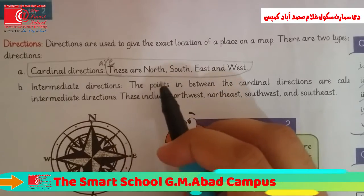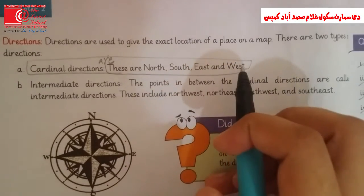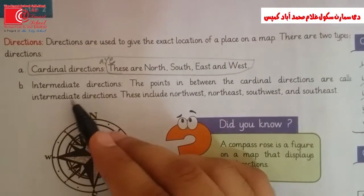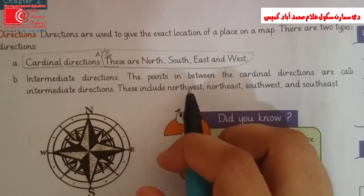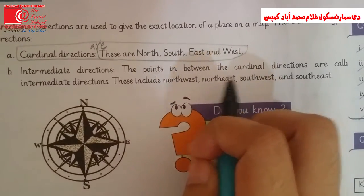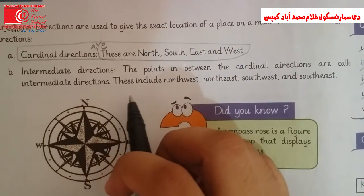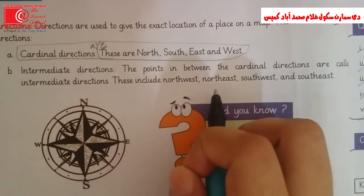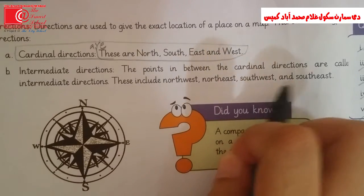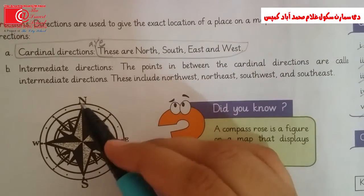Cardinal directions are North, South, East, and West. Intermediate directions are the points between the cardinal directions. These include North-West, North-East, South-West, and South-East.